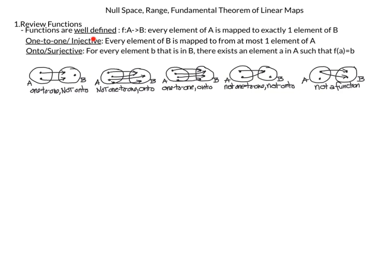For one-to-one or injective: every element of B is mapped to from at most one element of A. In our example with three elements of B, each is mapped to by at most one element of A — one mapped by one, one by one, one by zero — so this is injective. A function is not one-to-one when some element of B has two elements of A mapped onto it.